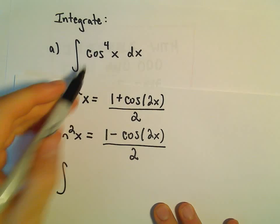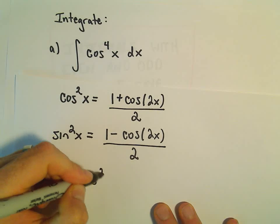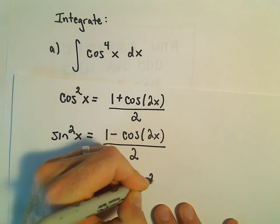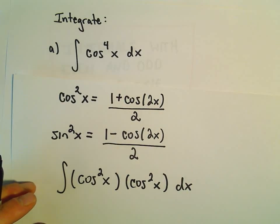So I'm going to rewrite our cosine to the 4th power of x. Well I can write that as cosine squared x times cosine squared x. And what I'm going to do is now start plugging in these identities.